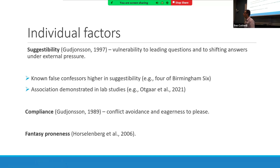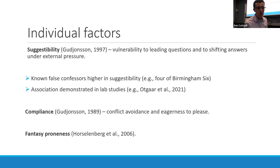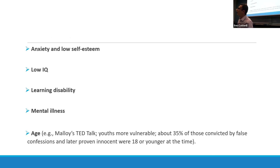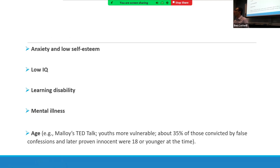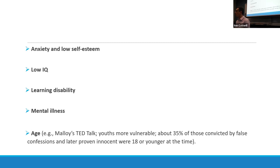Fantasy proneness — how prone one is to fantasy — may be associated with likelihood of dissociating and confusing fantasy with reality, leading to brief confusion during interrogation. Those scoring higher in anxiety and lower in self-esteem are also more likely to false confess under pressure. Other risk factors relate to limited grasp of consequences: low IQ or learning disability, mental illness, and young age — not realizing what will happen once you confess.